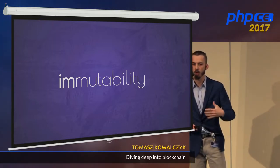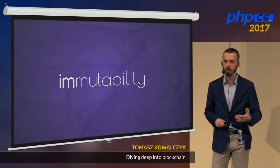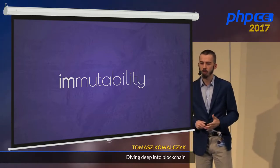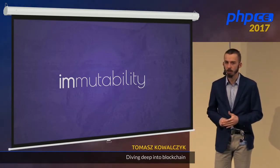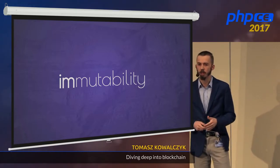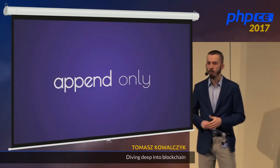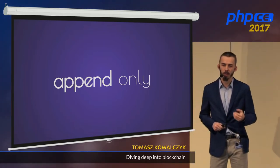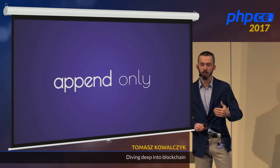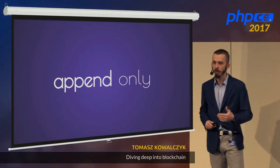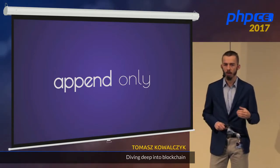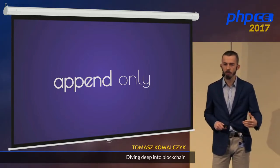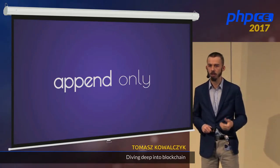If it's a database and it's immutable, what is it useful for? We need to change data — that's what databases are for. The way you change data inside blockchain is by appending new blocks. If you introduce some piece of information inside a single block — let's say you create a new user account — and you want to change that user's data, you need to reference the operation from the previous block and put your changes inside a new block.